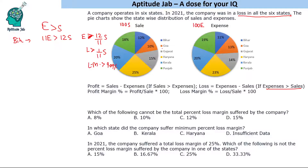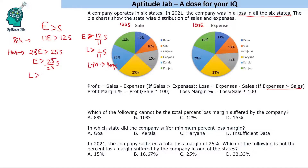For Goa the loss margin will be even higher since expenses are already very high. Looking at Haryana, sales appears to be 25 and expense 23 — that looks the least. For Haryana: E > (25/23)S, so loss > (2/23)S. Calculating 2/23 gives approximately 8.7 percent, so even in the best state (Haryana) the loss margin is about 8.7 percent.